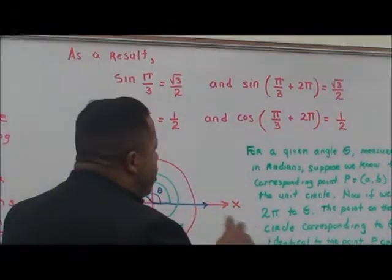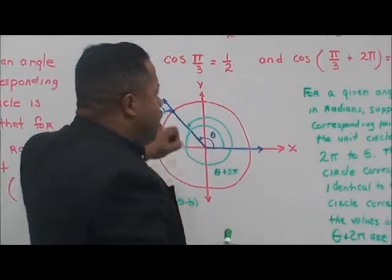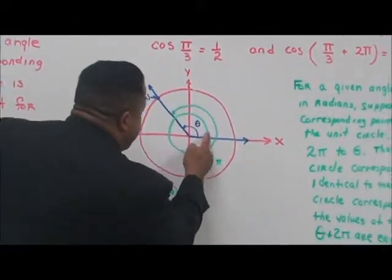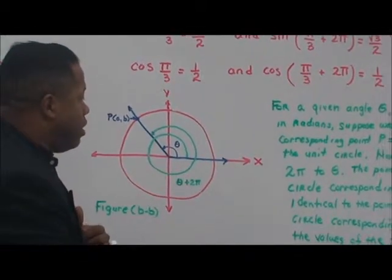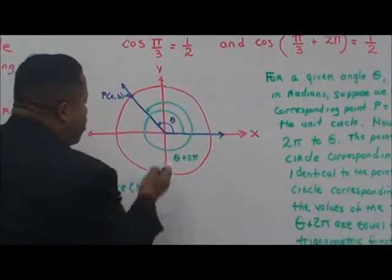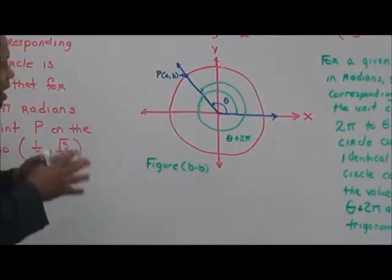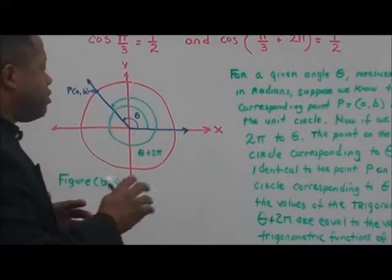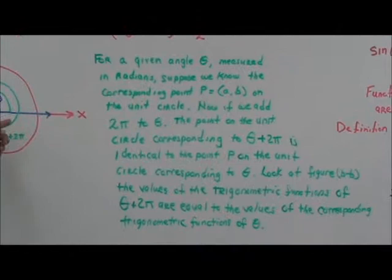For a given angle measured in radians, suppose we know the corresponding point P on the unit circle. If we add 2 pi — that is, go one complete revolution — and continue to the terminal side of the angle, we land on an identical point P on the unit circle. As figure BB shows, the values of the trigonometric functions of theta plus 2 pi equal the values of the corresponding trigonometric functions of theta.